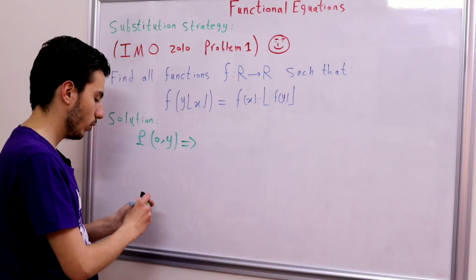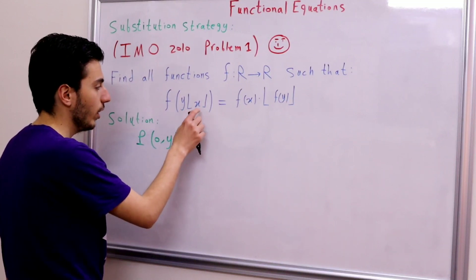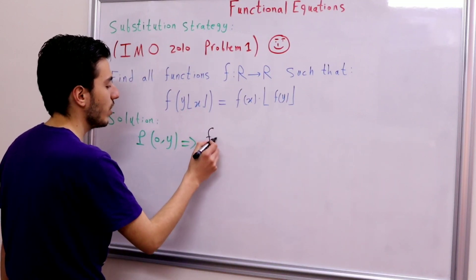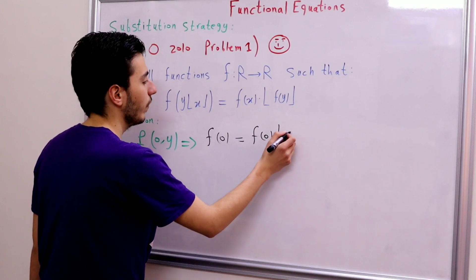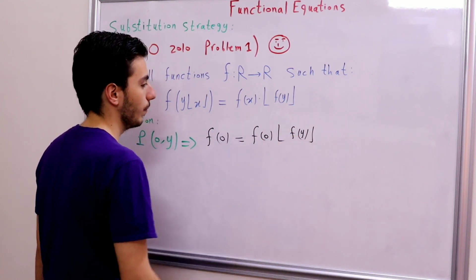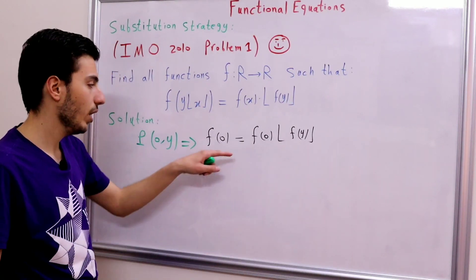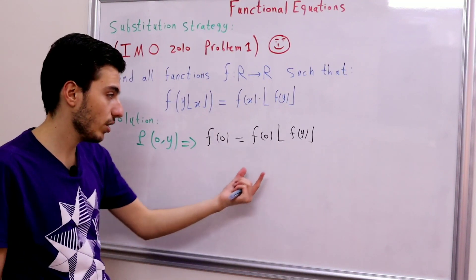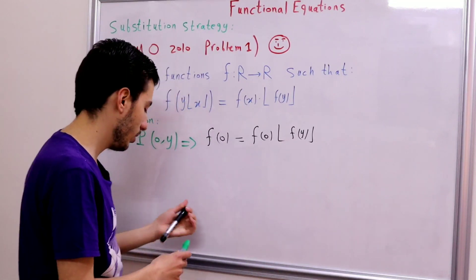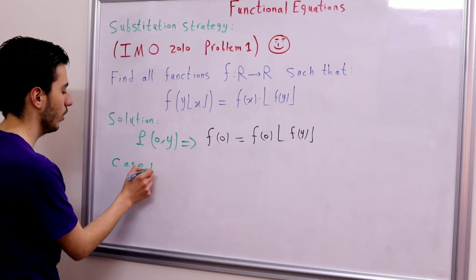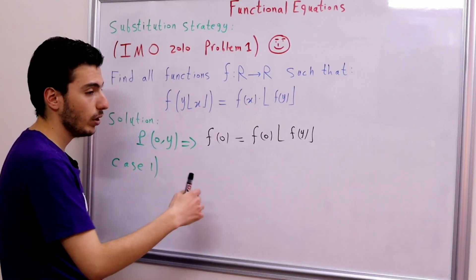Substituting x = 0, the left-hand side becomes f(y) · ⌊0⌋ = f(0), since ⌊0⌋ = 0. The right-hand side becomes f(0) · ⌊f(y)⌋. So we get f(0) = f(0) · ⌊f(y)⌋, which gives us two cases: either f(0) = 0, or ⌊f(y)⌋ = 1.